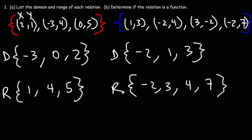Let's focus on the first relation. We have the ordered pair (2, 1) — input 2, output 1. Then negative 3 corresponds to 4, and 0 corresponds to 5. For the first relation, every input value has only one output value, so it is a function.